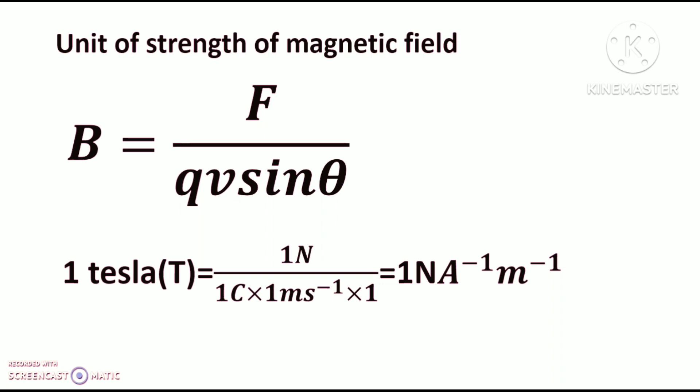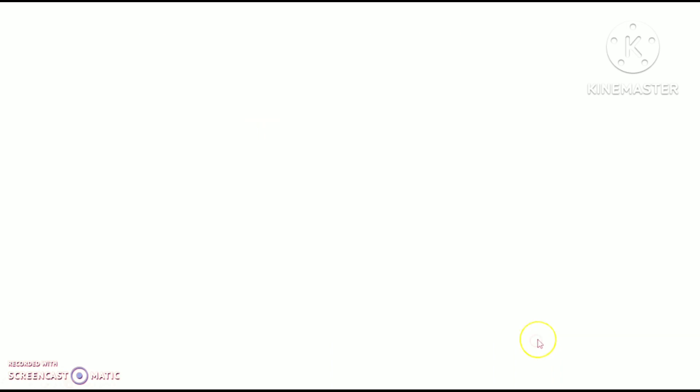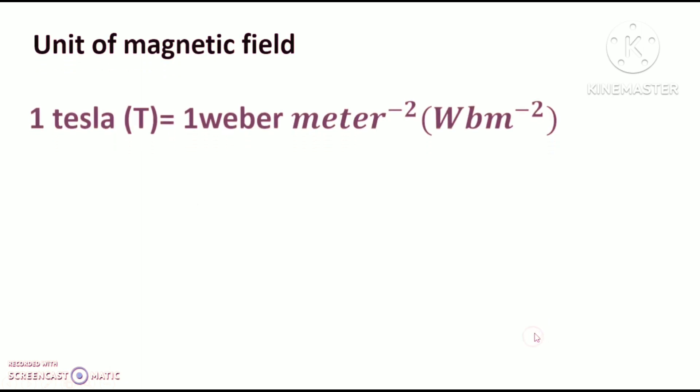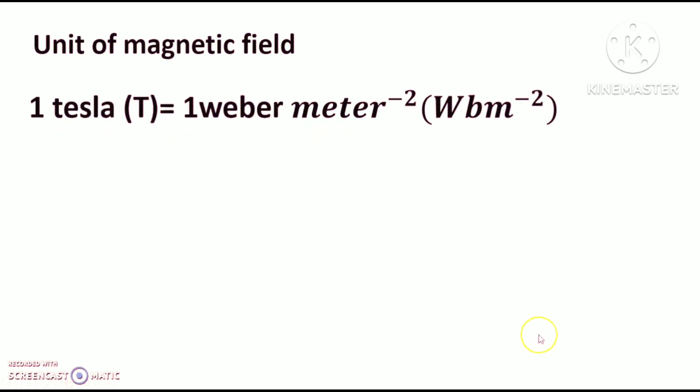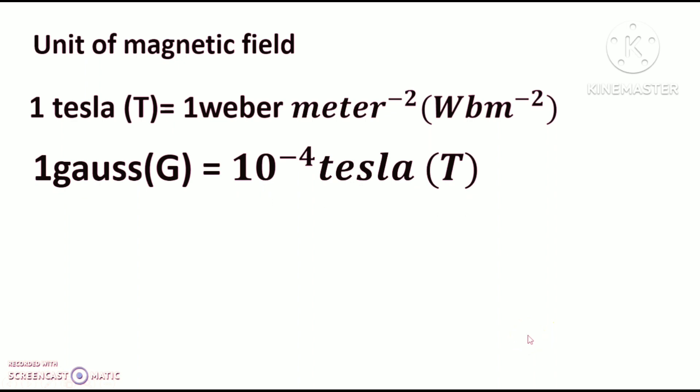The strength of magnetic field at a point is also measured as the magnetic flux crossing per unit area normally at the point. It is called one Tesla if a magnetic flux of one Weber crosses an area of one meter square along the normal to the surface. Therefore one Tesla equals one Weber per meter square. Magnetic field strength is also commonly expressed in Gauss, where 1 Gauss equals 10 to the power minus 4 Tesla.